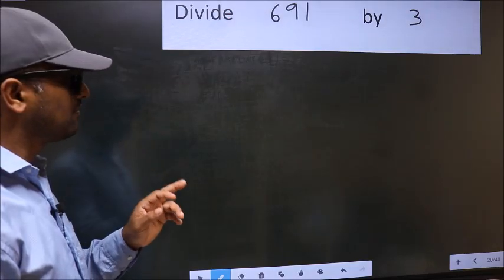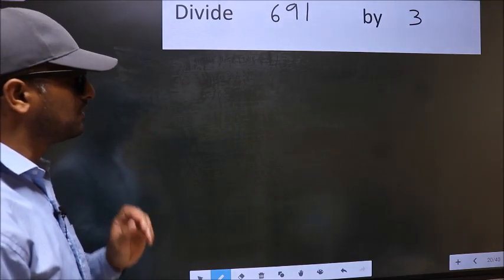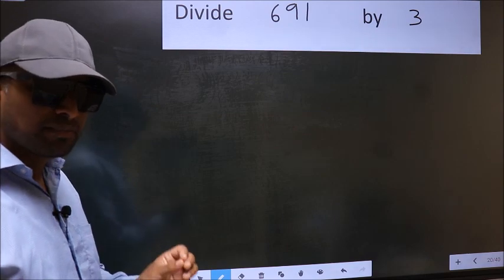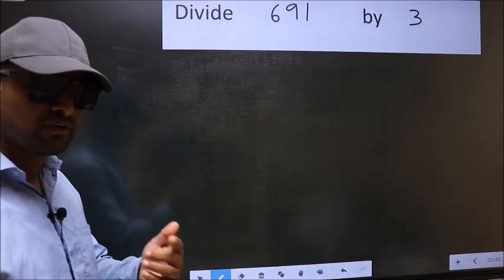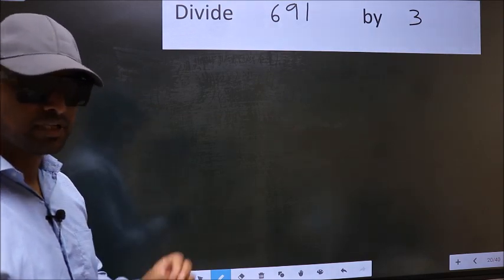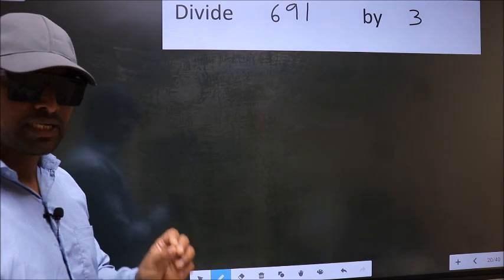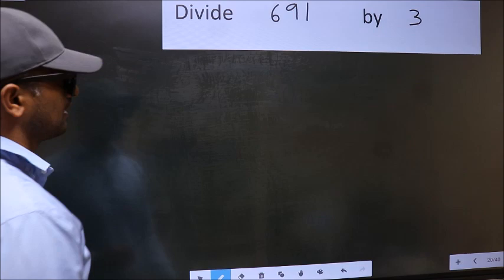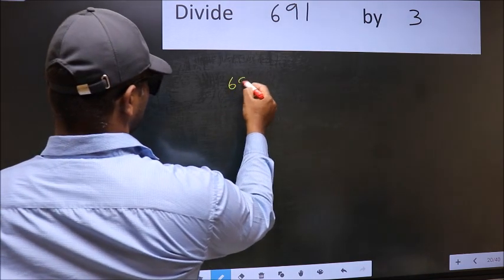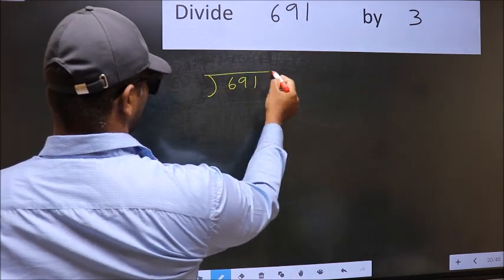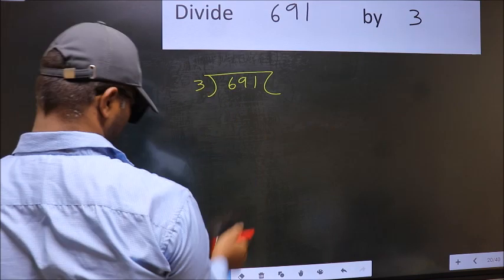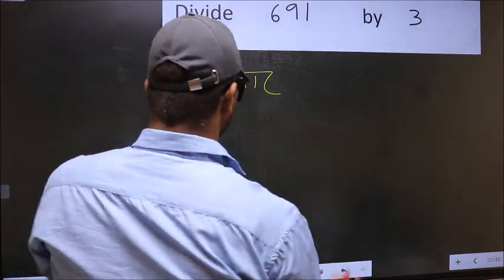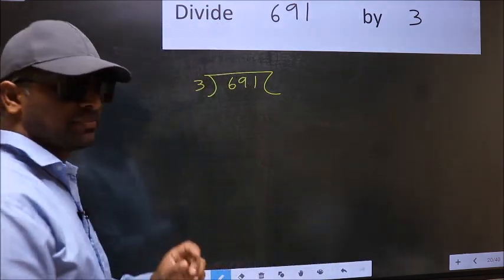Divide 691 by 3. While doing this division, many do this mistake. What is the mistake that they do? I will let you know. But before that, we should frame it in this way. 691 and 3 here. This is your step 1.